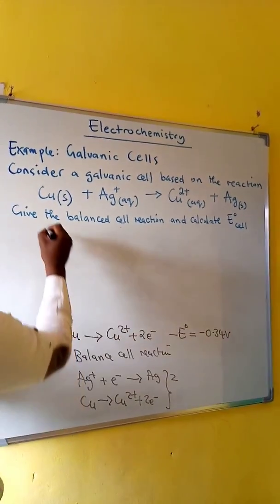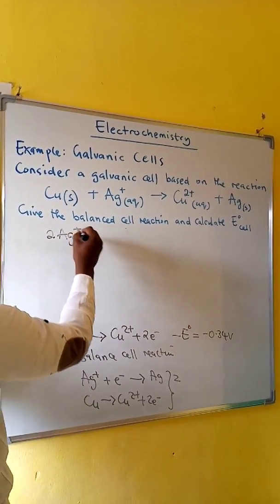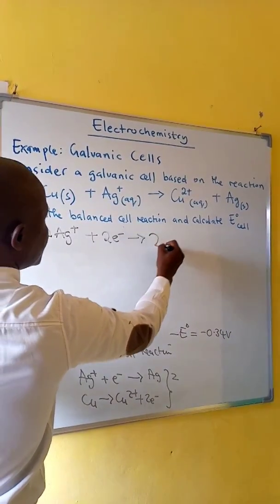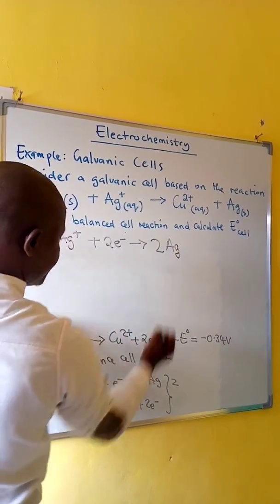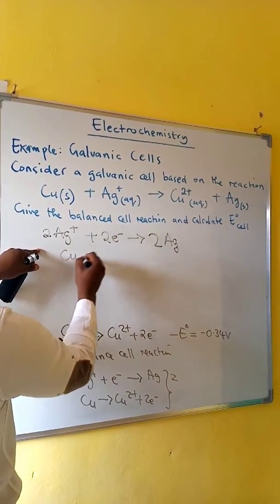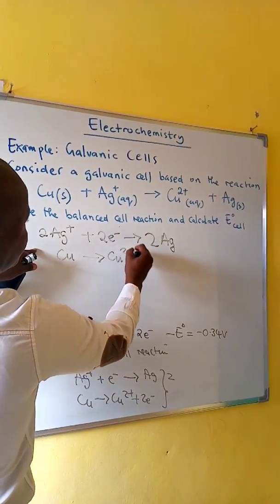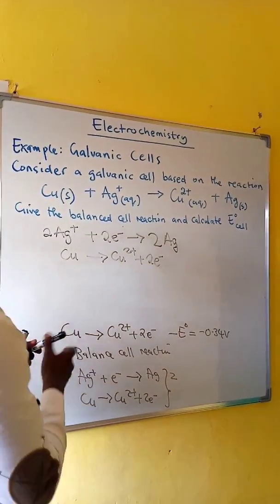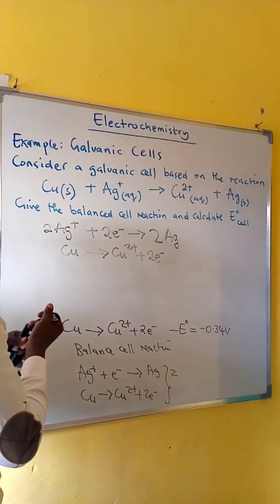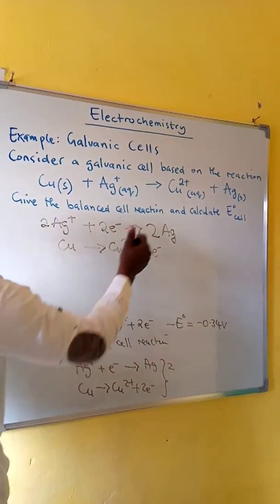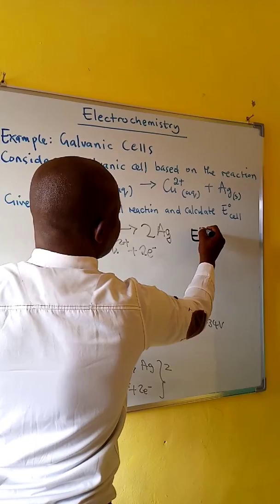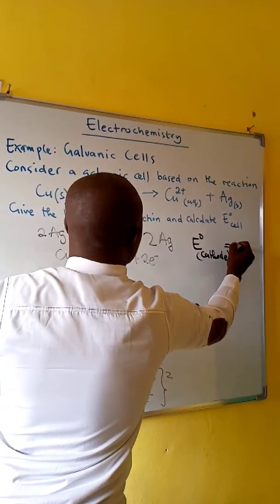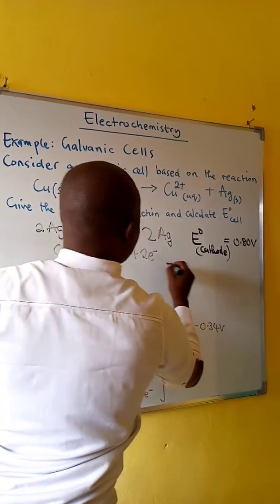So, we have 2 silver ion plus 2 electrons forms 2 silver. Then, reaction 2 remains the same. In this case, the potential is not affected by the integers. The potential will still remain the same.